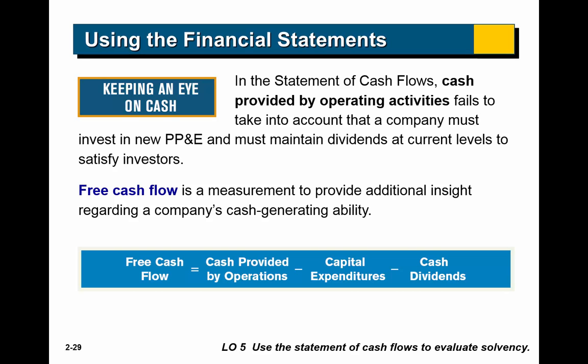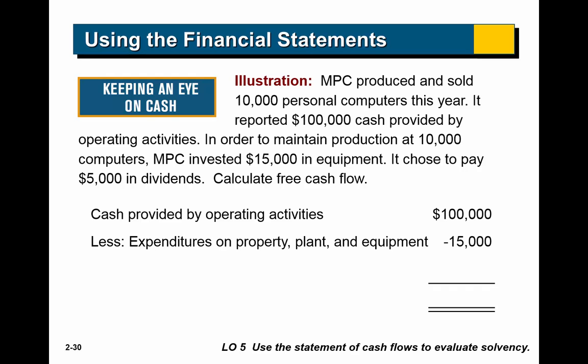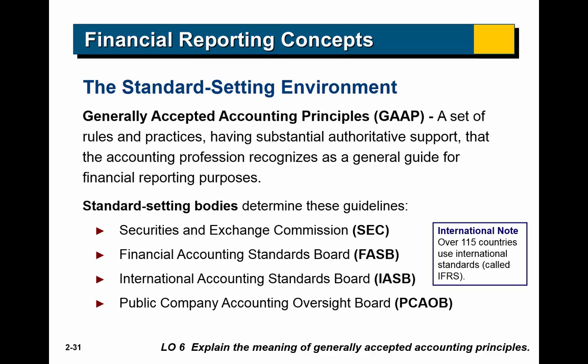From the statement of cash flows, we can calculate free cash flow — an idea of how much money is available for other spending. Free cash flow equals cash provided by operations minus capital expenditures (money spent on property, plant, and equipment) minus cash dividends. In an example: NPC reported $100,000 in cash provided by operating activities, invested $15,000 in equipment, and paid $5,000 in dividends, giving them their free cash flow figure.